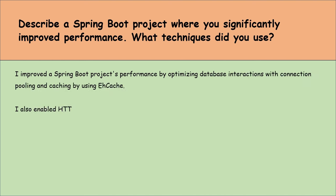To protect your application from abuse and ensure fair usage, you decide to implement rate limiting on your API endpoints. Describe a simple approach to achieve this in Spring Boot. To implement rate limiting in a Spring Boot application, a simple approach is to use a library like Bucket4j or Spring Cloud Gateway with built-in rate limiting capabilities. By integrating one of these libraries, I can define policies directly on API endpoints to limit the number of requests a user can make in a given time frame. This involves configuring a few annotations or settings in application properties to specify the rate limits, helping prevent abuse and ensuring all users have fair access to the application's resources.